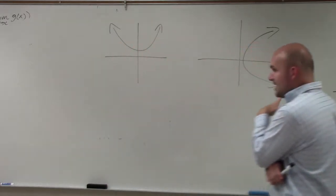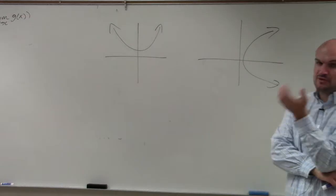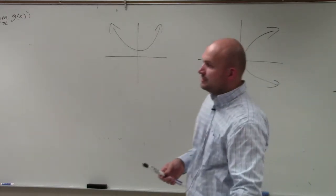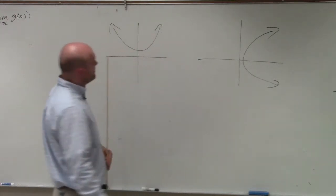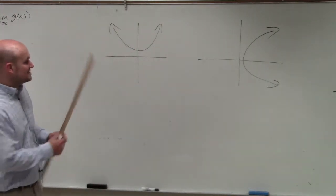When we're looking at the graphs of functions, one of the easiest ways to determine if we're talking about a function or not is using the vertical line test. And you can use your pencil, your finger, your book, a piece of paper. It doesn't really matter. But basically what the vertical line test is telling us, because remember,